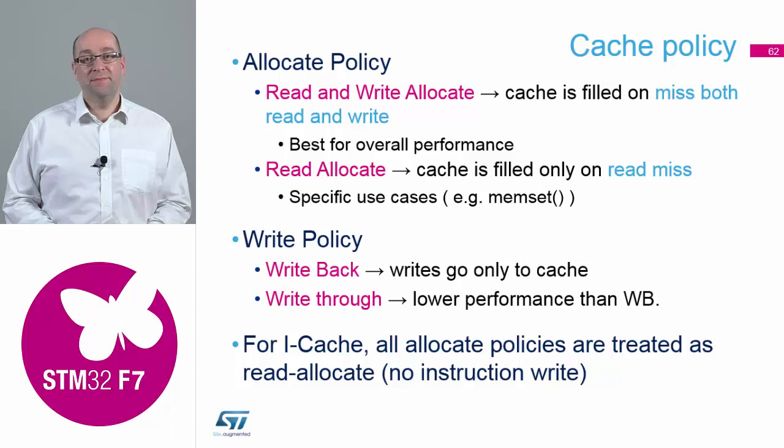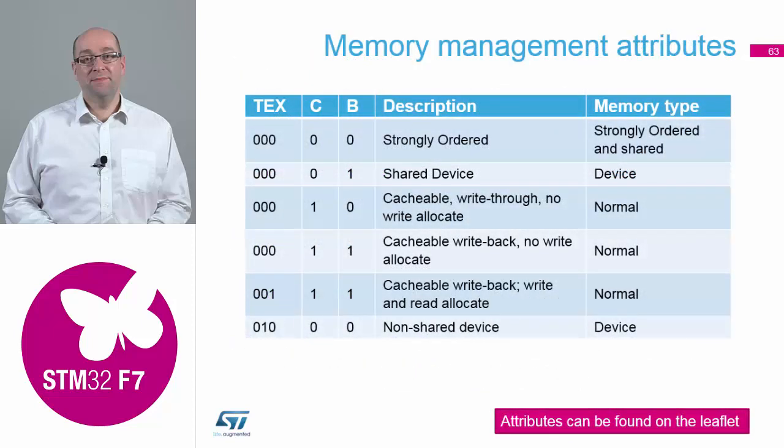Inside there you've got the different policies. The allocate policy will decide what you do when you get a cache miss — what you move across into the cache — and the same goes for the read allocate to do with the read miss. Then you've got the write-back and write-through policies for the data cache, to see what information actually stays local inside the cache or goes out to the external memories that you're replicating.